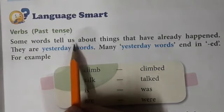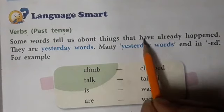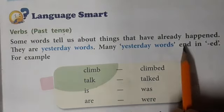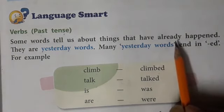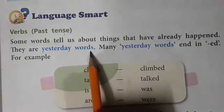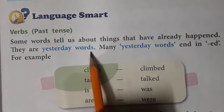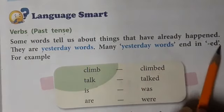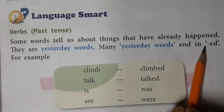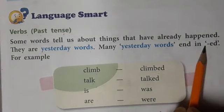Some words tell us about things that have already happened. Some words tell us that things which have already occurred — those are placed in the category of past tense. They are yesterday words. Many yesterday words end in ED — that means their last letters are ED. Let us see the examples.